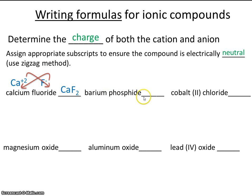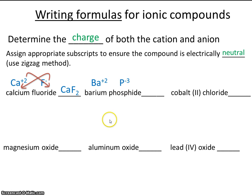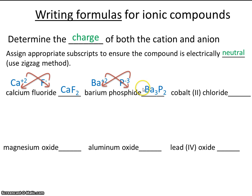Let's write the formula for barium phosphide. Find barium on your periodic table — it's in group 2 and has a charge of plus 2. Phosphide is the ion of phosphorus, and phosphorus when it forms an ion has a charge of minus 3. So let's go ahead and zigzag these charges: we'll bring the 3 down behind barium and the 2 down behind phosphorus. So the formula is Ba3P2. The point of doing this is to ensure that barium phosphide is electrically neutral, with the same number of positives and negatives.